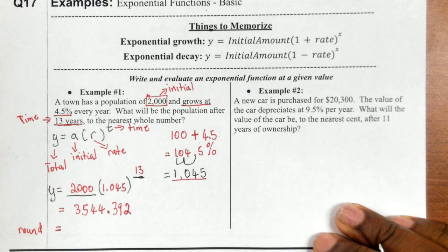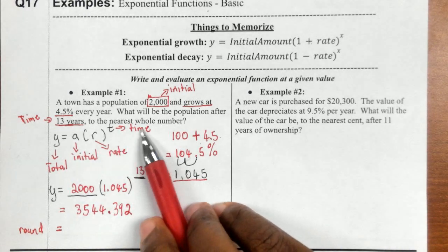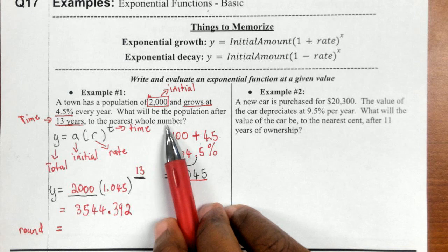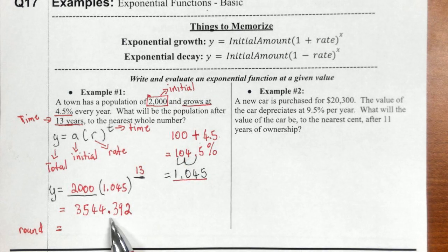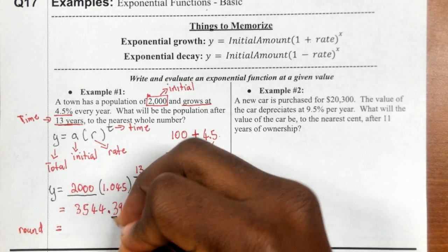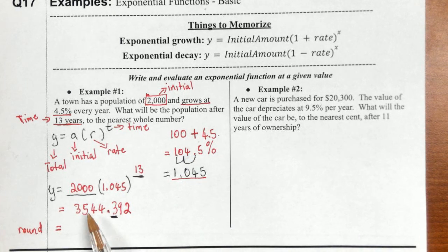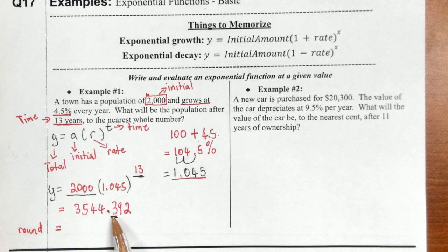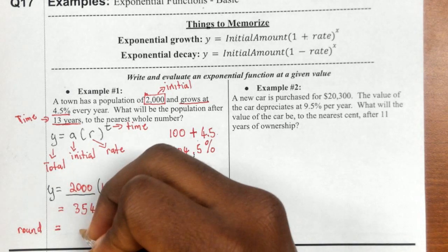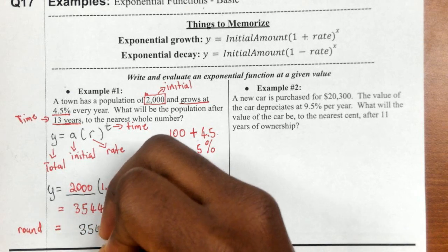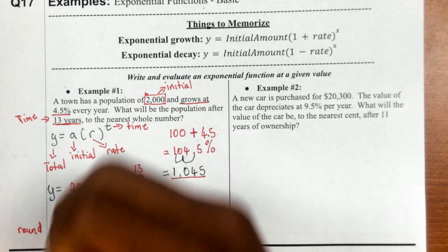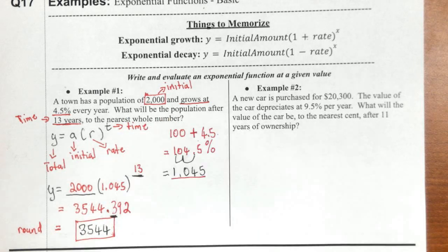When rounding, we need to figure out how the question wants us to round. It says round to the nearest whole number, so I look at the first number after the decimal point. If that number is five or larger, everything to the left goes up by one. Because it is not five or larger, everything to the left of what I underline stays the same. So my answer is 3,544.